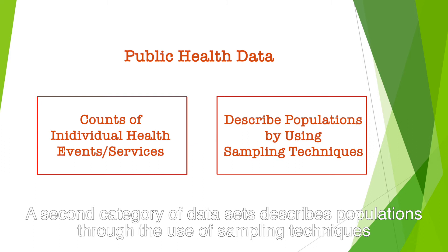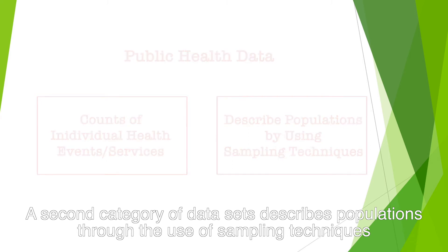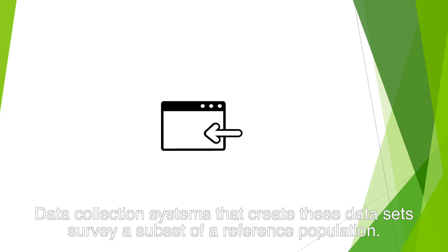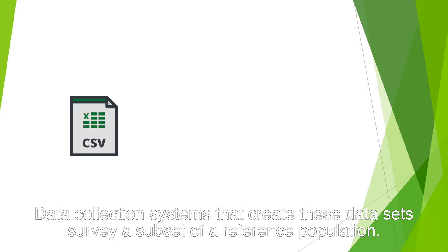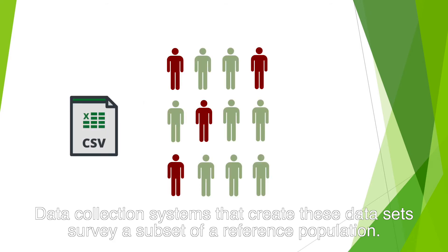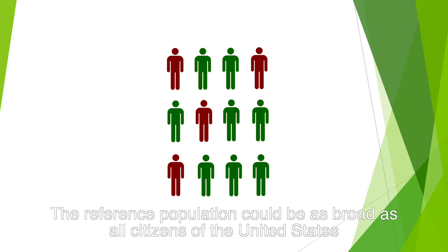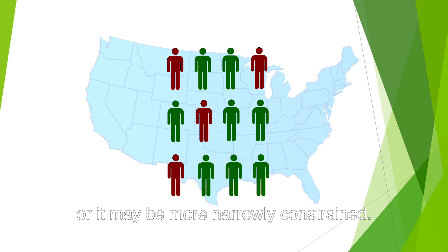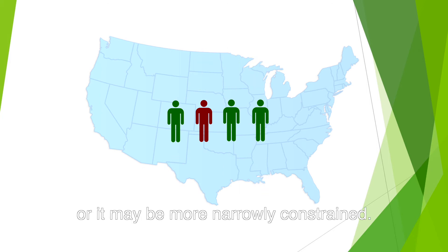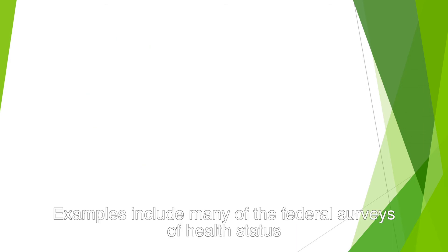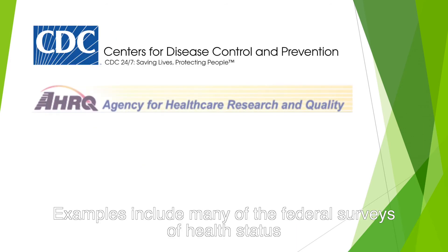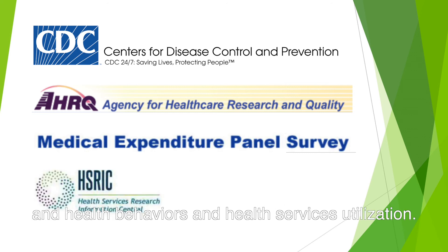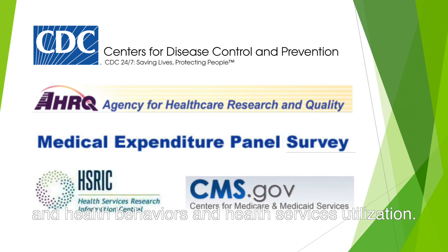The second category of datasets describes populations through the use of sampling techniques. Data collection systems that create these datasets survey a subset of a reference population. The reference population could be as broad as all citizens of the United States, or it may be more narrowly constrained.